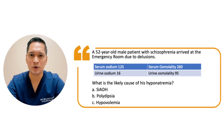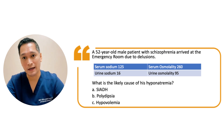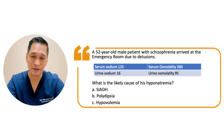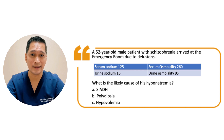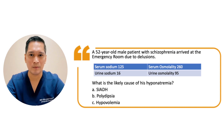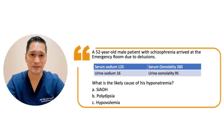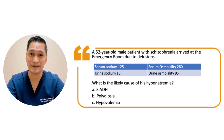A 52-year-old male patient with schizophrenia arrived in the ER due to delusions. Sodium is 125, serum osmolality 260, urine osmolality 95, and urine sodium 16. The most probable cause of his hyponatremia is psychogenic polydipsia. The urine osmolality is less than 100, indicating excessive water intake, which is commonly observed in cases of psychogenic polydipsia or patients with inadequate solute intake.